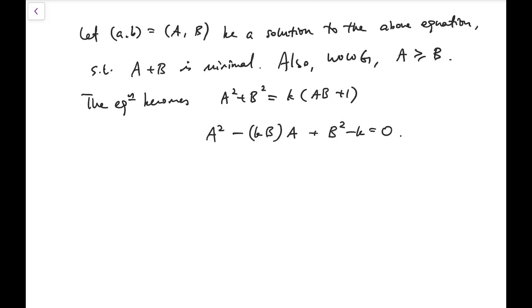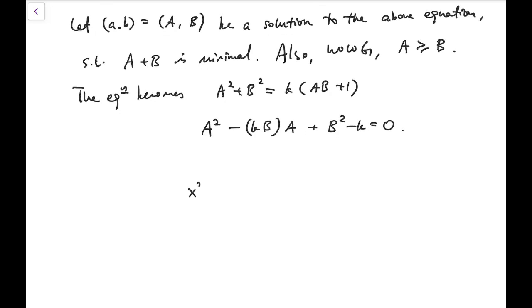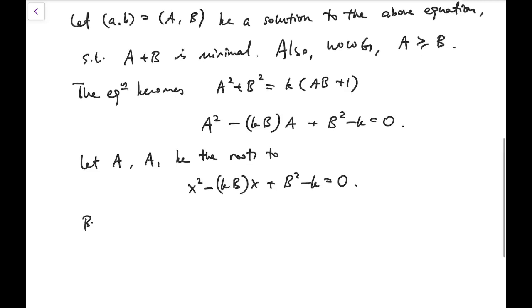Now, that means this big A is the root to the equation x squared minus kB times x plus B squared minus k equals 0. And for this quadratic equation, surely there must be a second root. So I'm going to let A and A1 be the roots to this equation. And now I can bring in Vieta's formula.